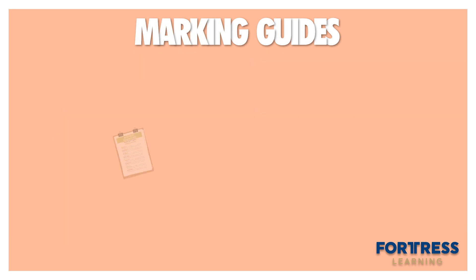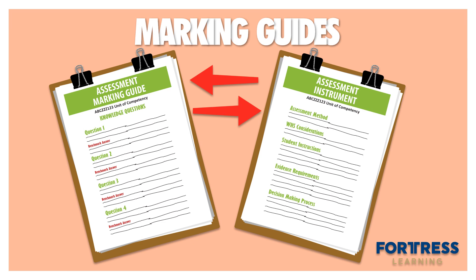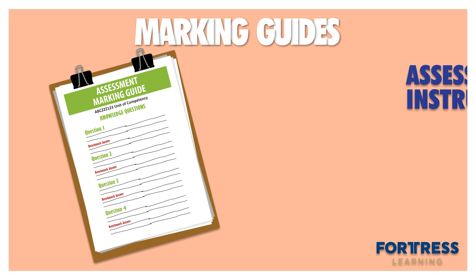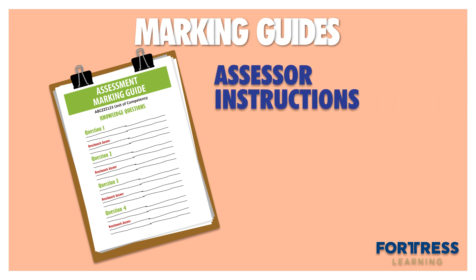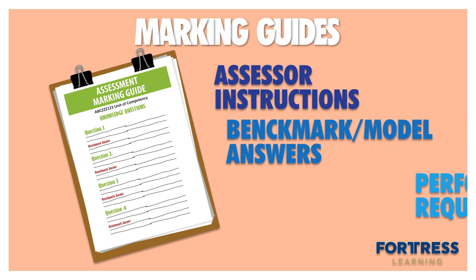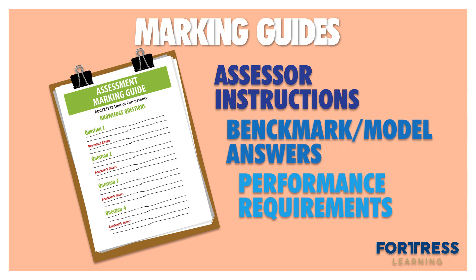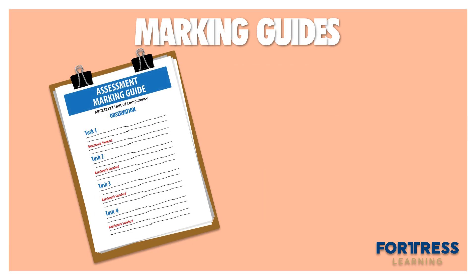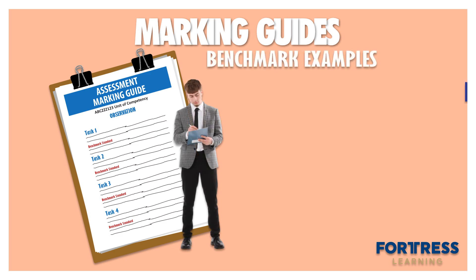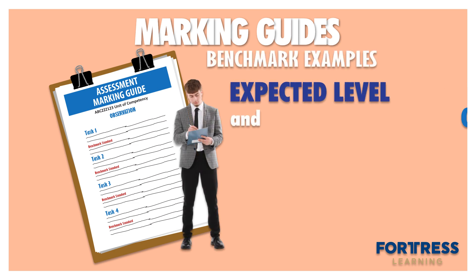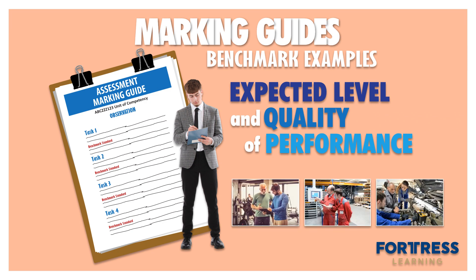The marking guide is generally a mirror of the assessment instrument, but it contains additional information and instructions to assist the assessors. This includes benchmark or model answers and performance requirements, depending on what method of assessment is being used. For direct observation, the marking guide for the observer checklist will contain benchmark examples of the level and quality of performance that the student is expected to demonstrate for each specific task. It may also have examples of things that are not considered to be satisfactory.